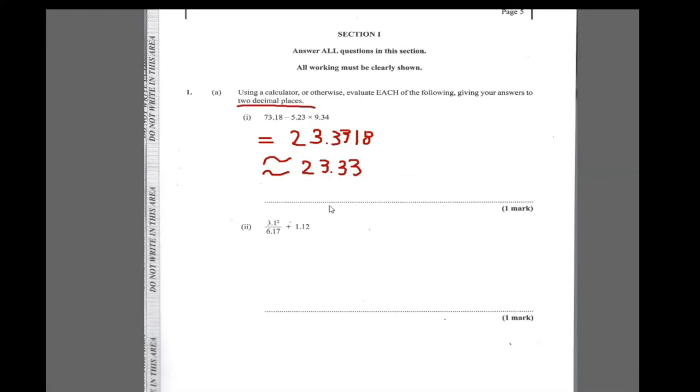Then give this to two decimal places as well. Just put it in your calculator, 3.1 squared divided by 6.17 plus 1.12. When you work it out, you're going to get 2.6775. But then you want your answer to two decimal places, so this is also approximately equal to, this seven is greater than five, so it works out to be 2.68. Nice and easy.